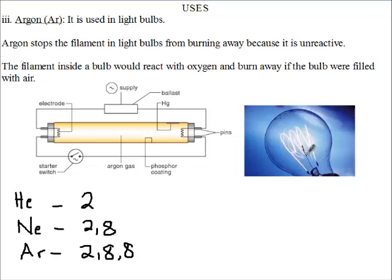Therefore, we put Argon in there so that we create an unreactive chamber, so that as the filament is burning, it still stays the same. Because the air in there surrounding the filament is unreactive. So here we see that Argon stops the filament in light bulbs from burning away because it is unreactive.